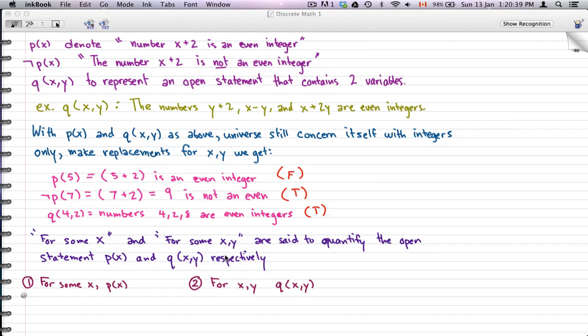...some x, and for some x,y. They're said to quantify the open statements P(x) and Q(x,y) respectively. For one, we have 'for some x, P(x),' where P(x) is just some open statement. For two, we have 'for x,y, Q(x,y).'